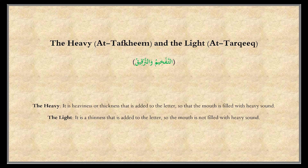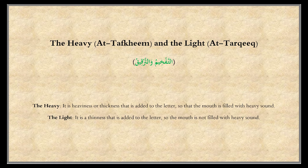When the sound is coming out from your lungs, if you elevate the back of the tongue, the sound will be diverted to the roof of the mouth — it comes down and the mouth is filled with the heavy sound. The light is thinness added to the letter, so the mouth is not filled with heavy sound. The method is by keeping the deepest part of the tongue lowered, so the sound goes straight out from your mouth and stays light.